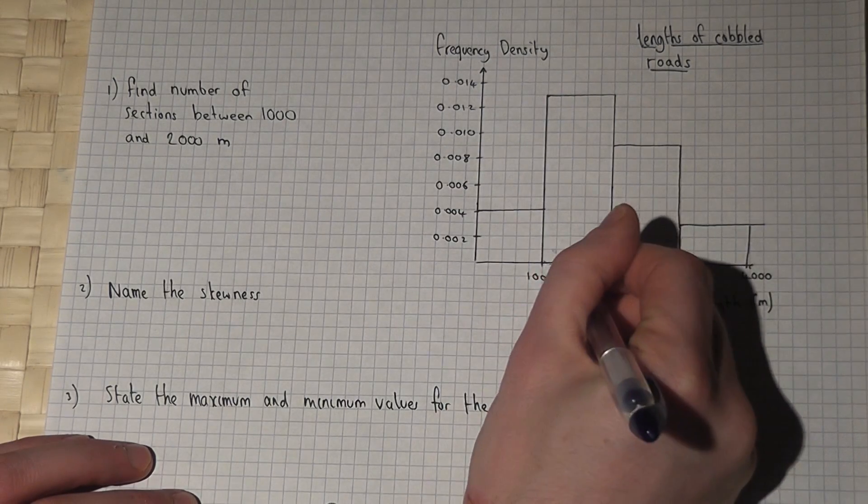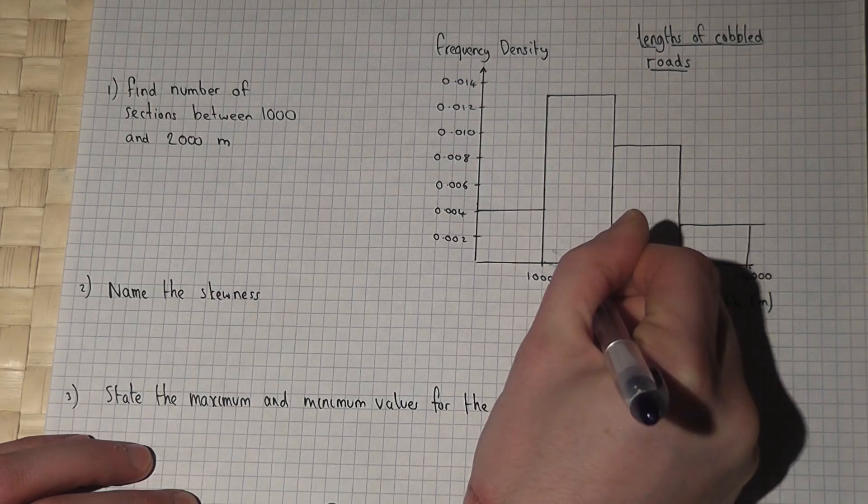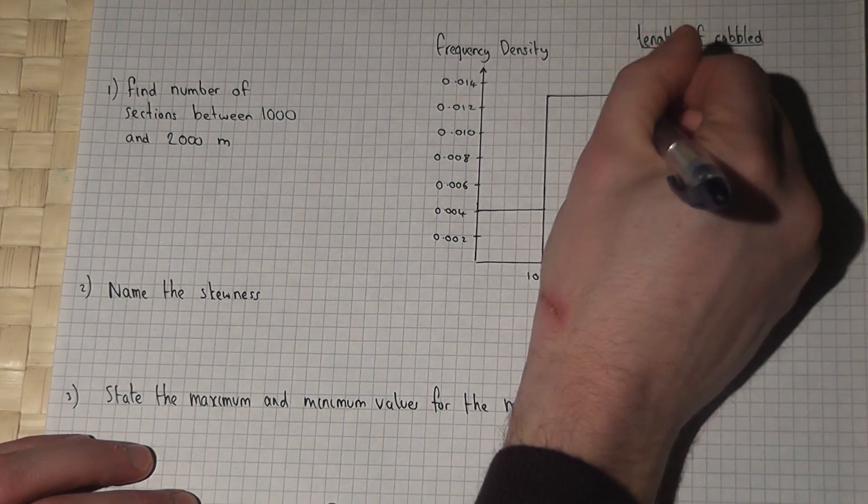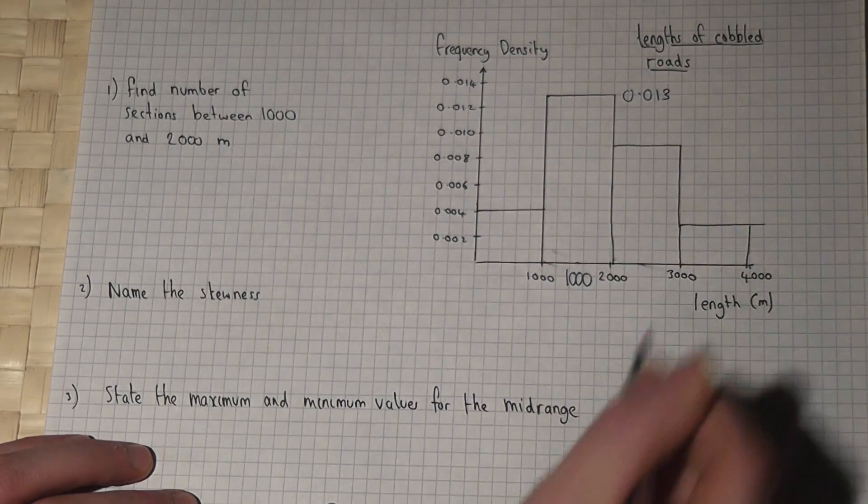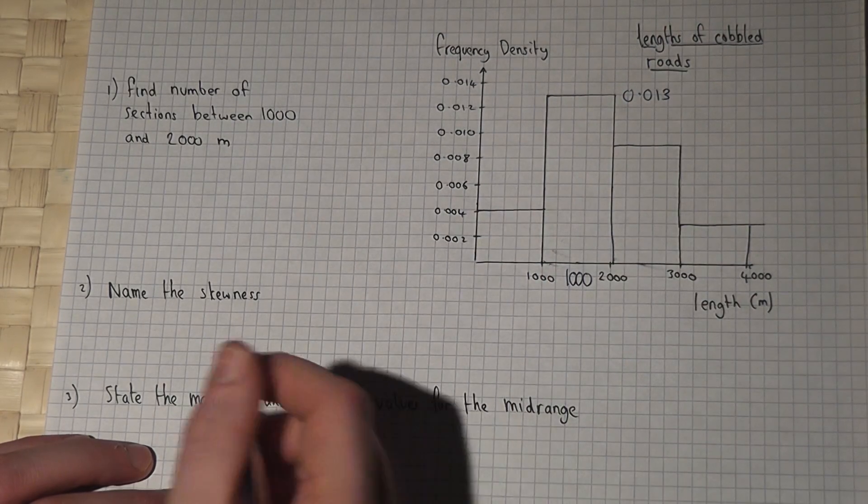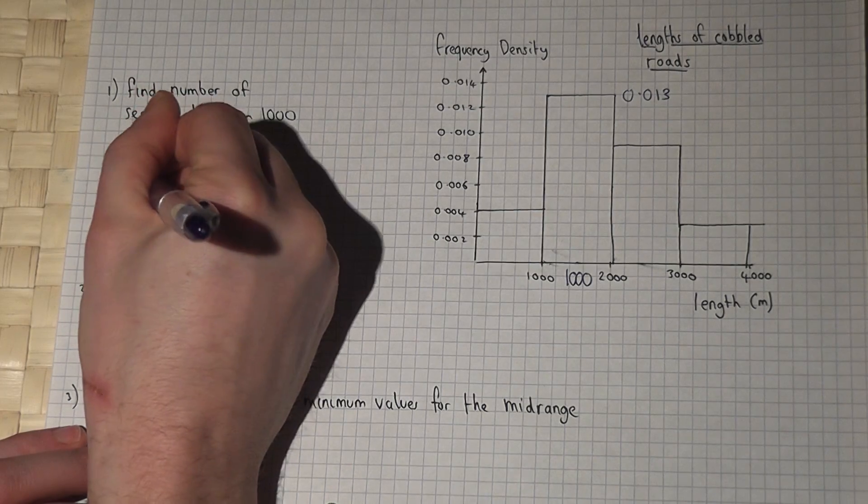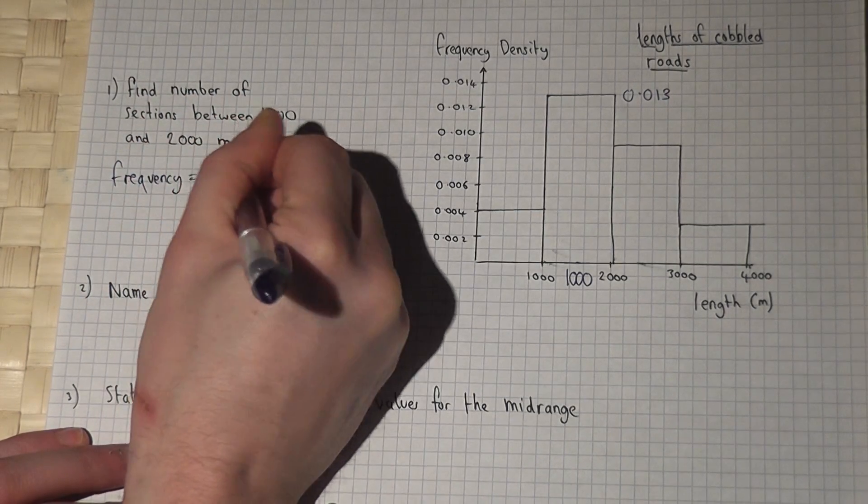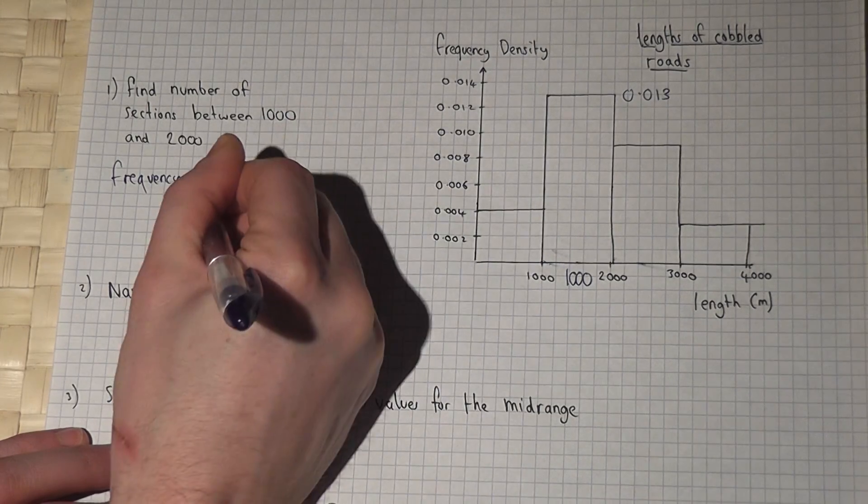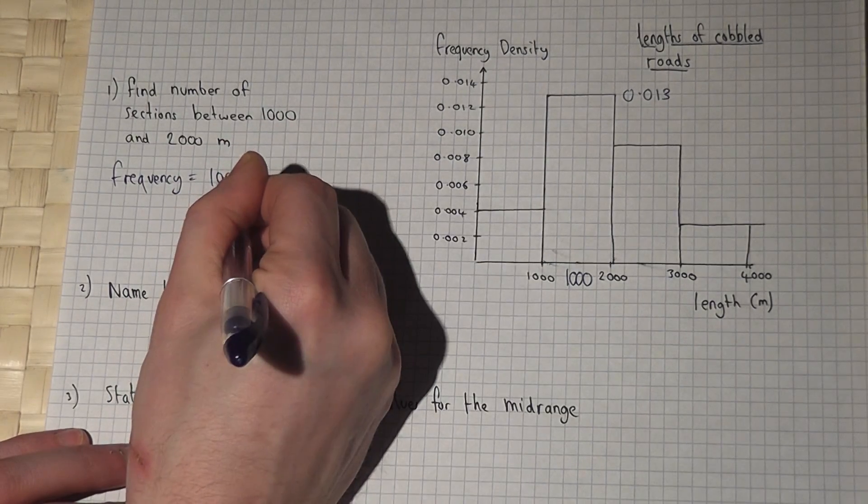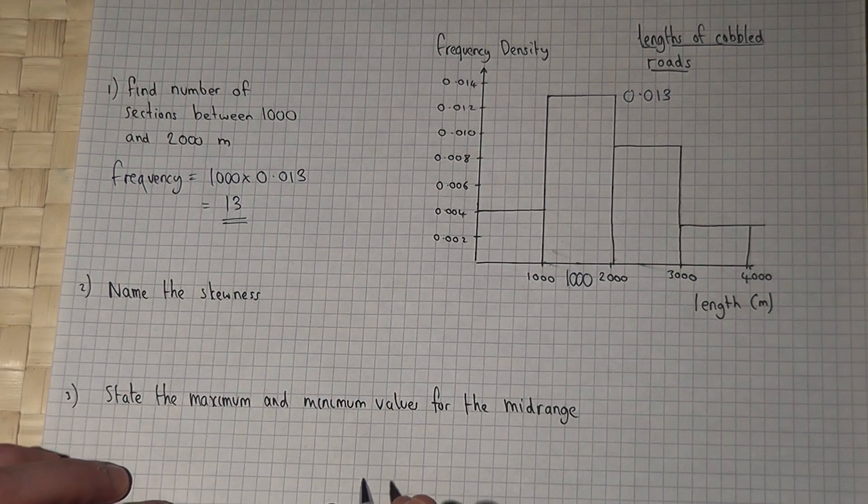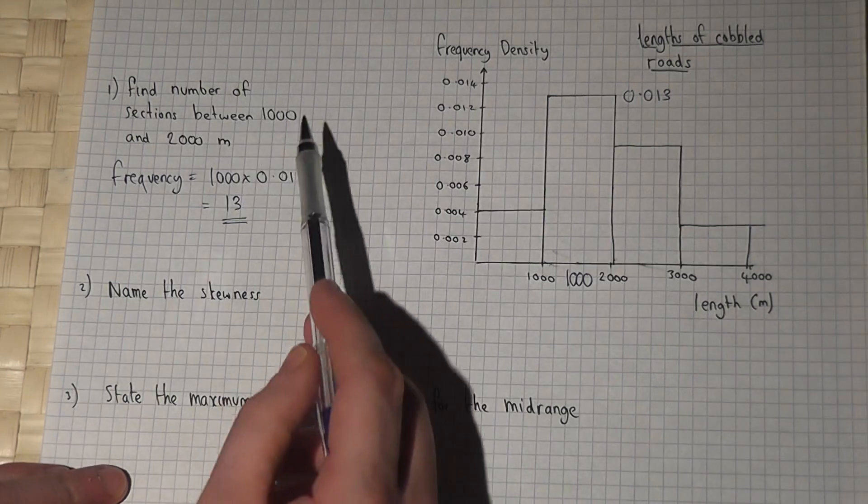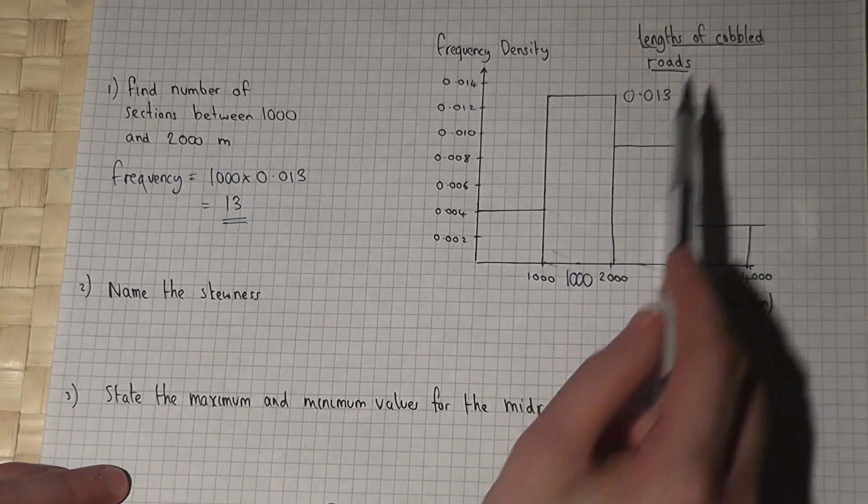The width of this bar is 1000 and the height is 0.013, so the area which gives the frequency is 1000 times 0.013, which equals 13. So there were 13 road sections between 1000 and 2000 meters which were cobbled.